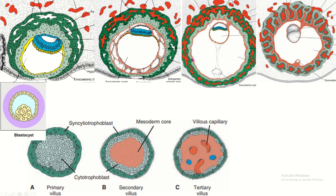The chorion has two parts: chorion laeve and chorion frondosum. The cytotrophoblast and syncytiotrophoblast form projected structures called villi. These villi are more developed in the chorion frondosum area, where chorionic villi are well developed, while in the chorion laeve the chorion is smooth and villi are less developed.